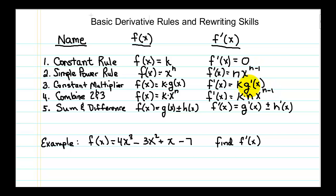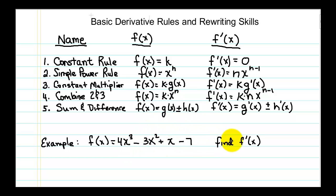Now these rules are all for single terms. A lot of times we want to handle expressions with multiple terms, like polynomials. If we view each term as another function, then a polynomial is a set of terms that are added and subtracted together. The sum and difference rule says you can take the derivative of each term separately and then add and subtract them together. So if we apply these rules to a simple polynomial problem and find its derivative, in the first step we apply the sum and difference rule to take the derivative of each part separately.